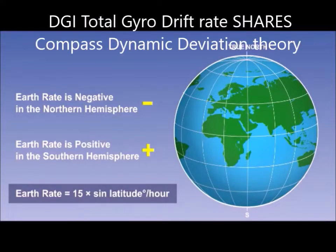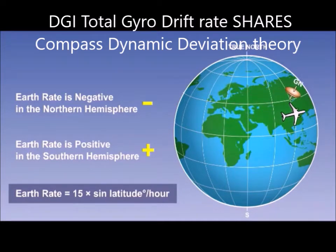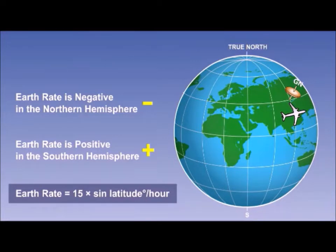Apparent wander due to transport wander will occur at the same time as earth rate. In the case of transport wander, the additional factor is that the gyro itself is moved across the earth. Although earth rate and transport wander occur at the same time, when we come to do calculations we calculate the error for transport wander separately and add or subtract it to the equation for total wander. We will look at this in more detail in the companion lesson on drift rate calculations.